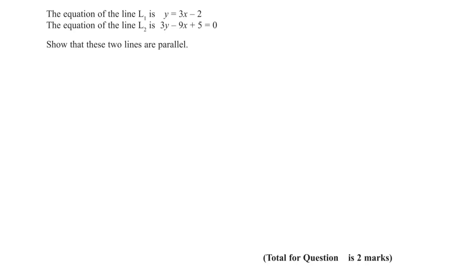In this question, we're given the equation of two lines, L1 and L2, and we need to show that these two lines are parallel. The first thing we need to do is define what it means for two lines to be parallel. Two lines that are parallel have the same gradient.